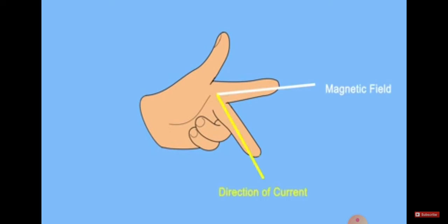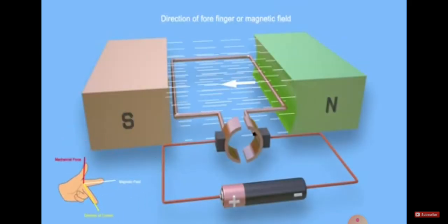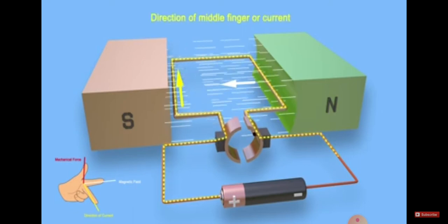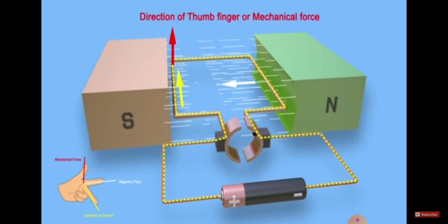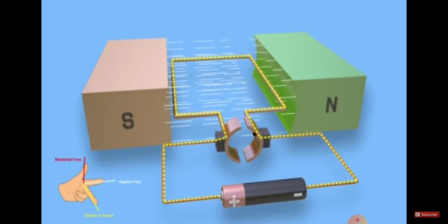The machine rotation follows Fleming's Left Hand Rule. According to Fleming's Left Hand Rule, the magnetic field direction and the direction of current together determine the mechanical force. The three fingers are held perpendicular to each other to represent these directions.